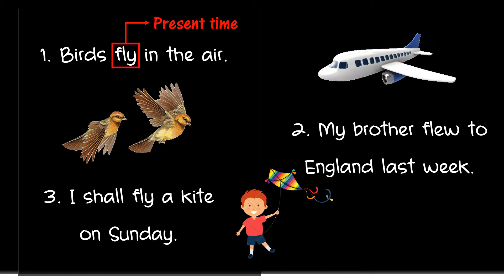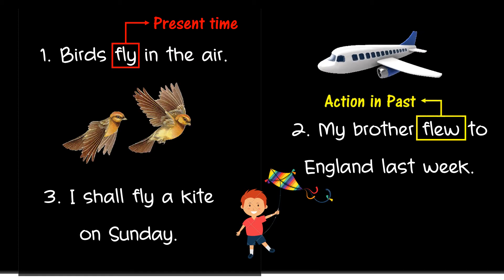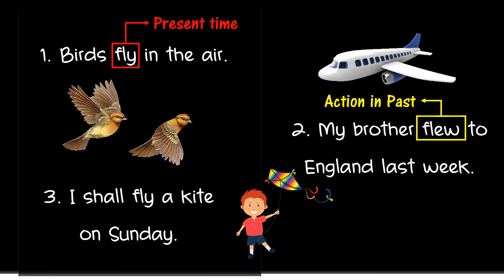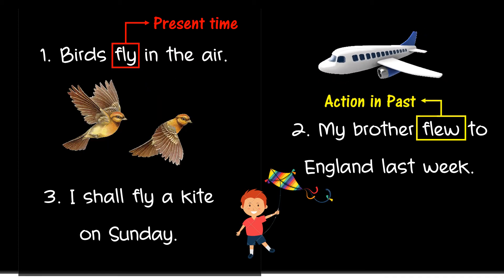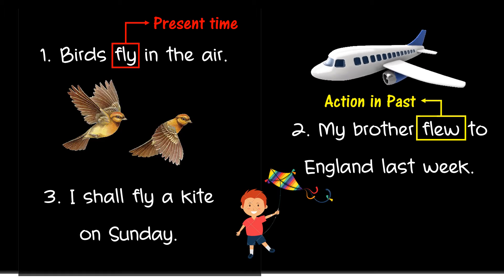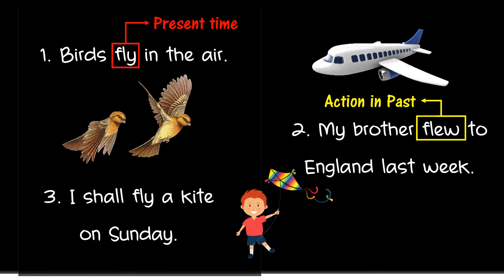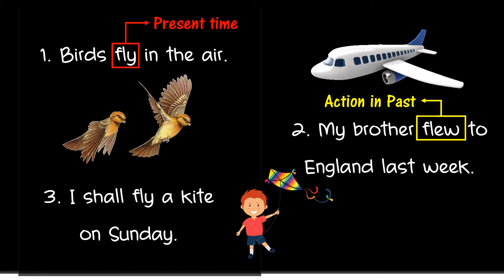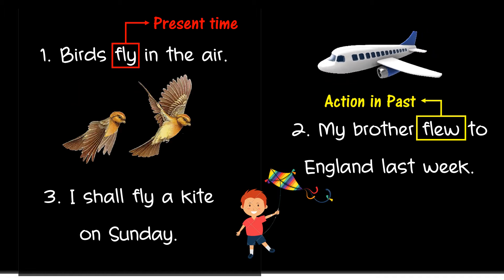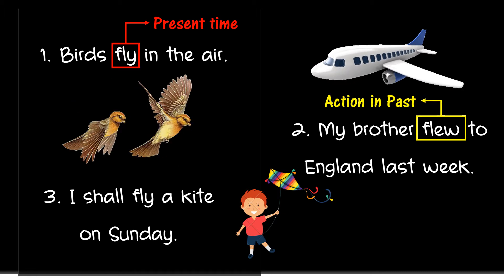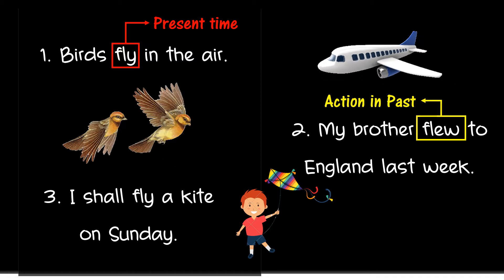In the second sentence, the verb 'flew' refers to the action in the past. The past tense is used to describe things that have already happened — for example, earlier in the day, yesterday, last week, three years ago, and so on.